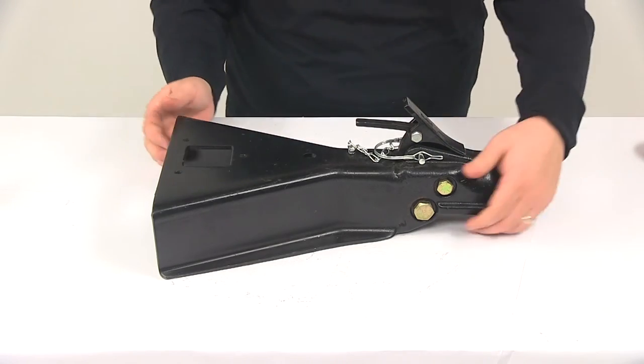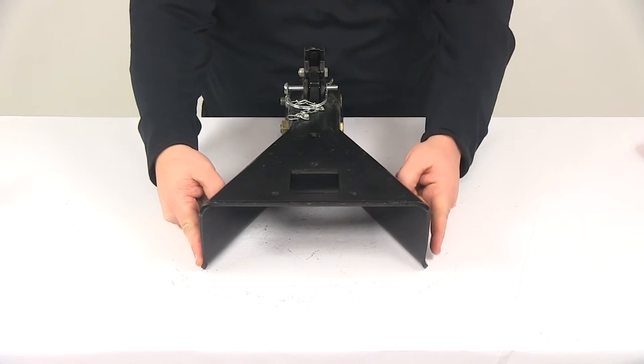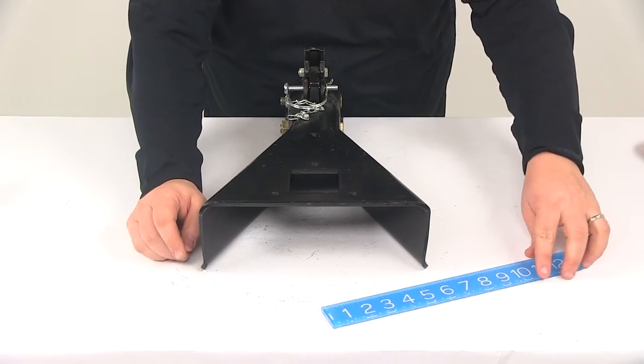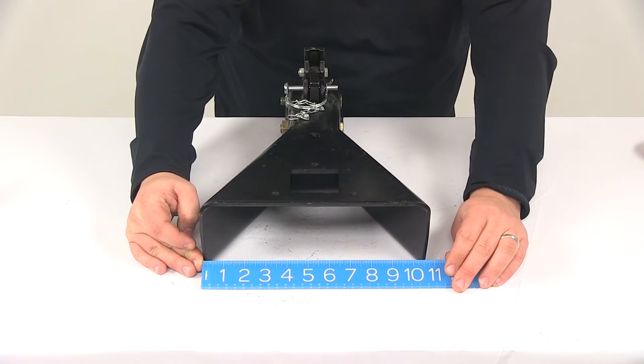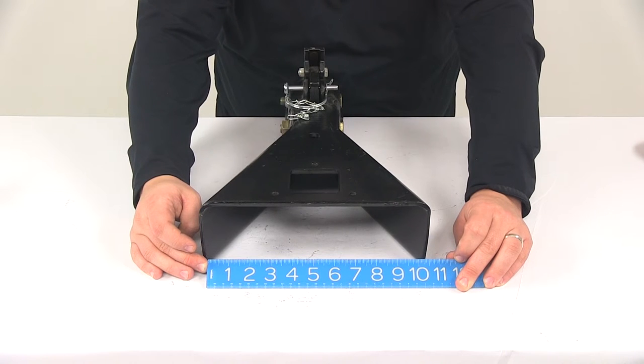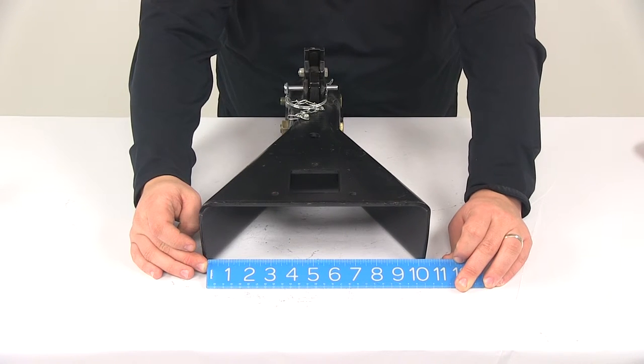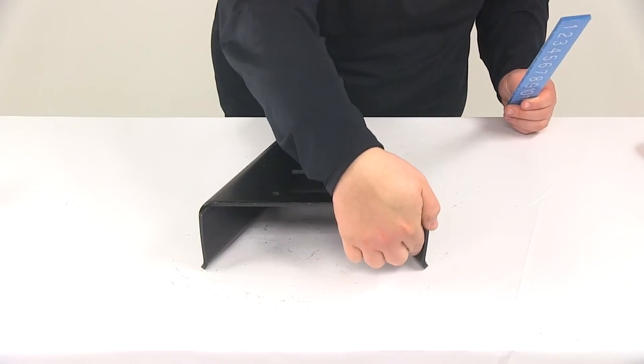The overall width, we're going to take a look at the measurement from outside edge to outside edge. That's going to measure about ten and five eighths of an inch. Inside edge to inside edge is going to measure about ten and one eighth of an inch wide. That's from this point right here to this point right here.